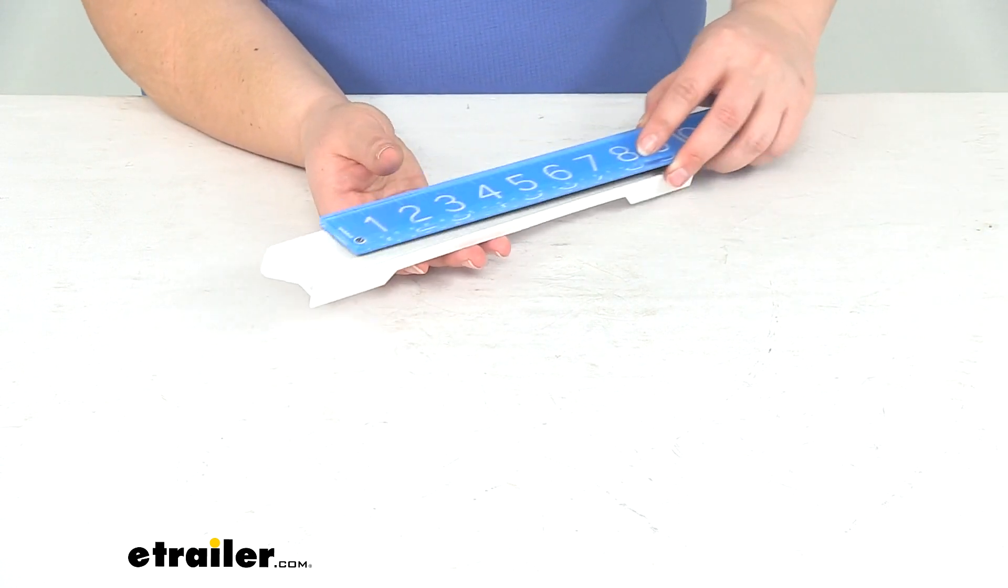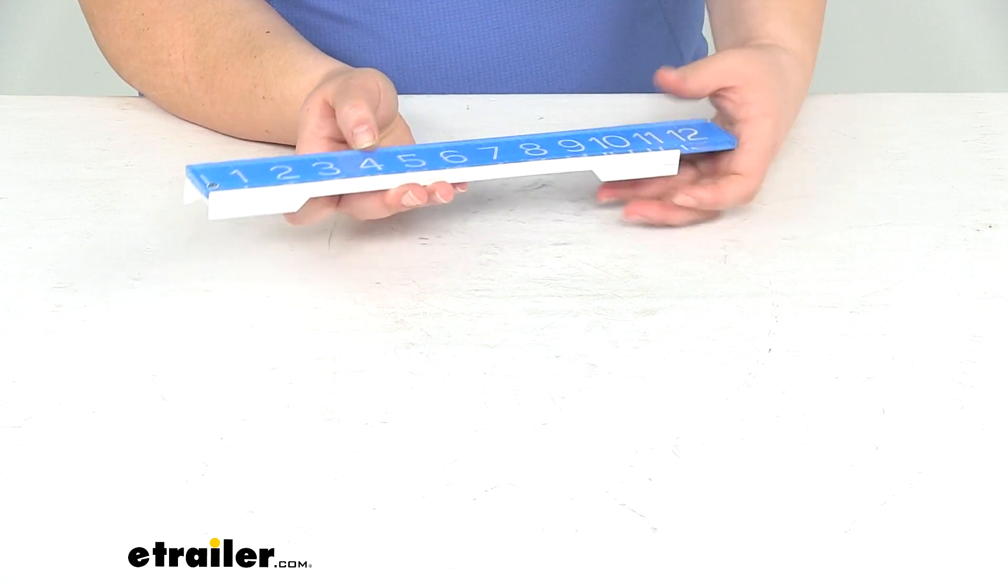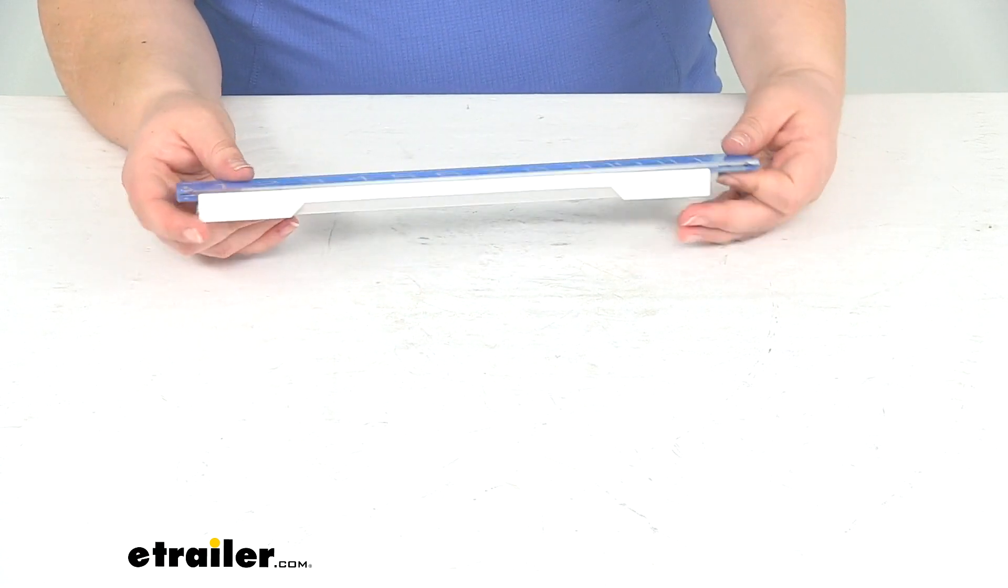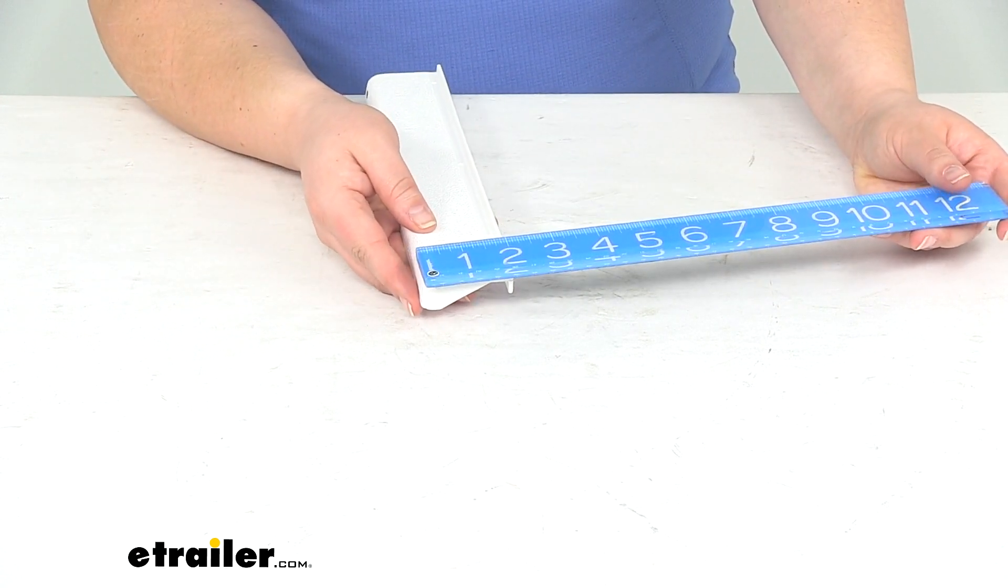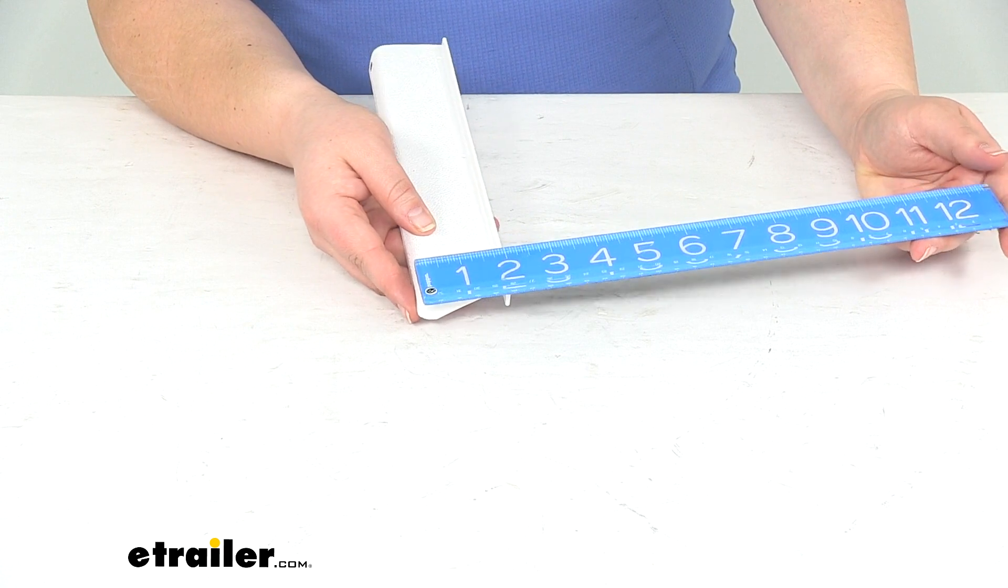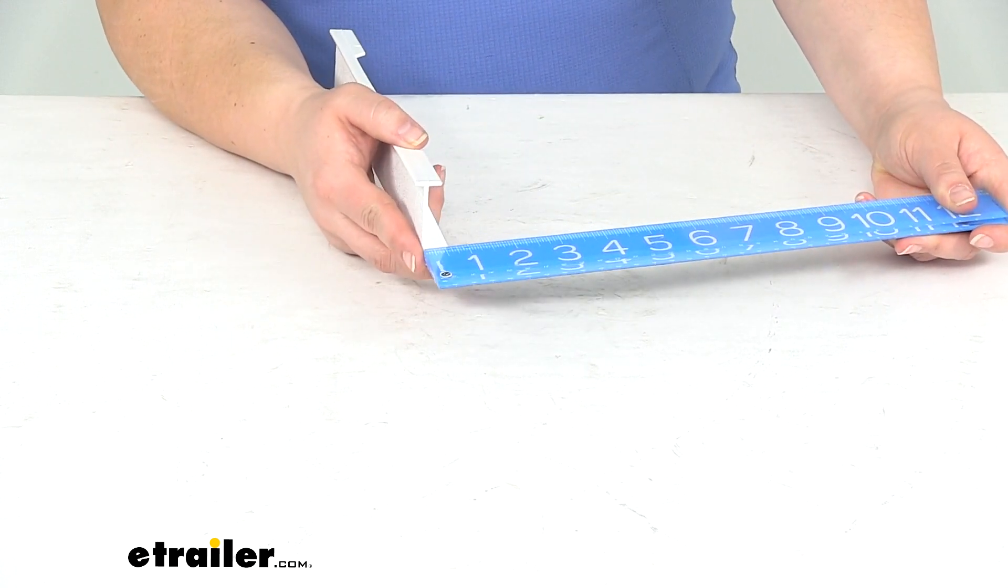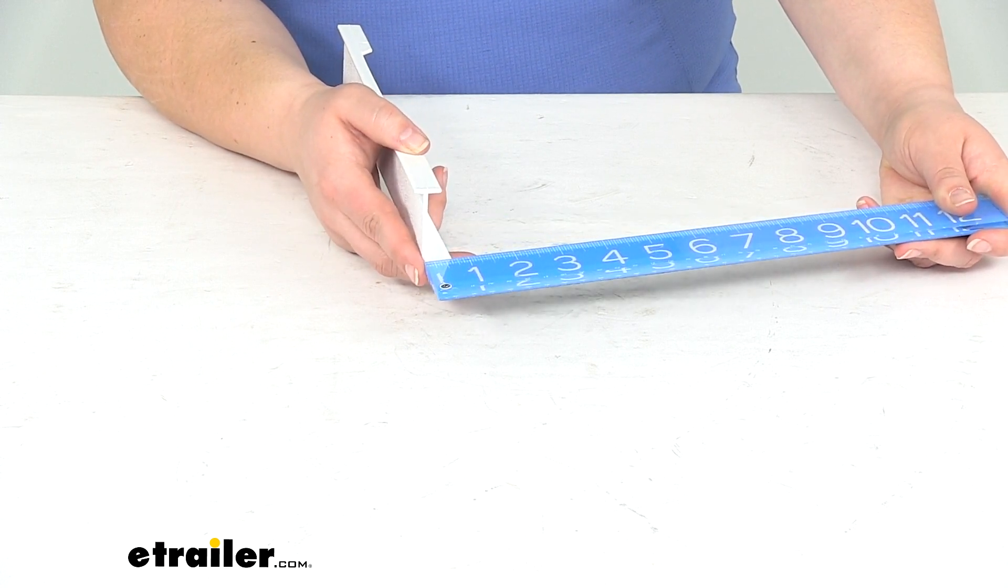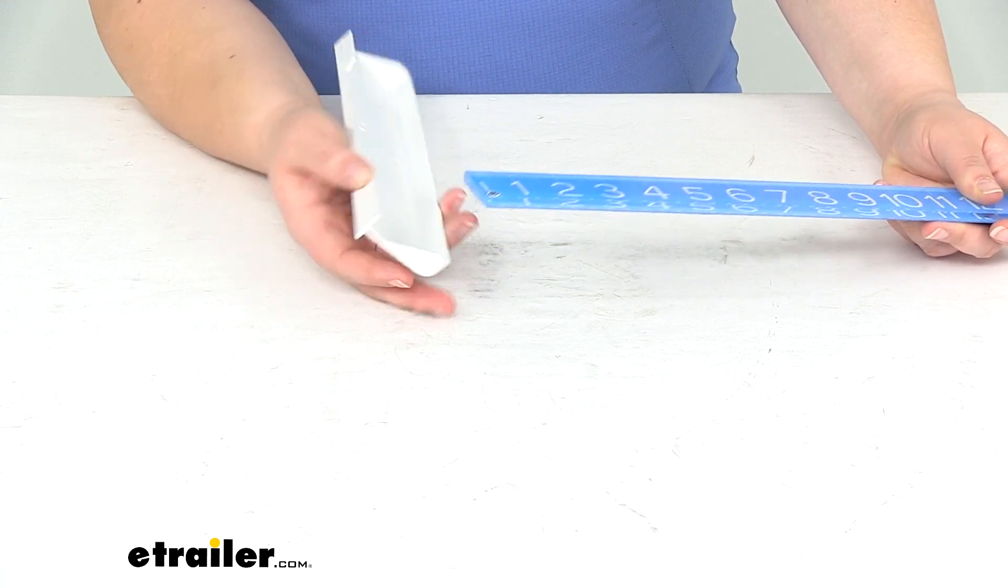As far as the size, it measures about 12, or really more about 11 and a half inches wide by about 2 inches. And then the thickest portion is about three quarters, or really more like five eighths of an inch. This tab here is about five eighths of an inch as well.